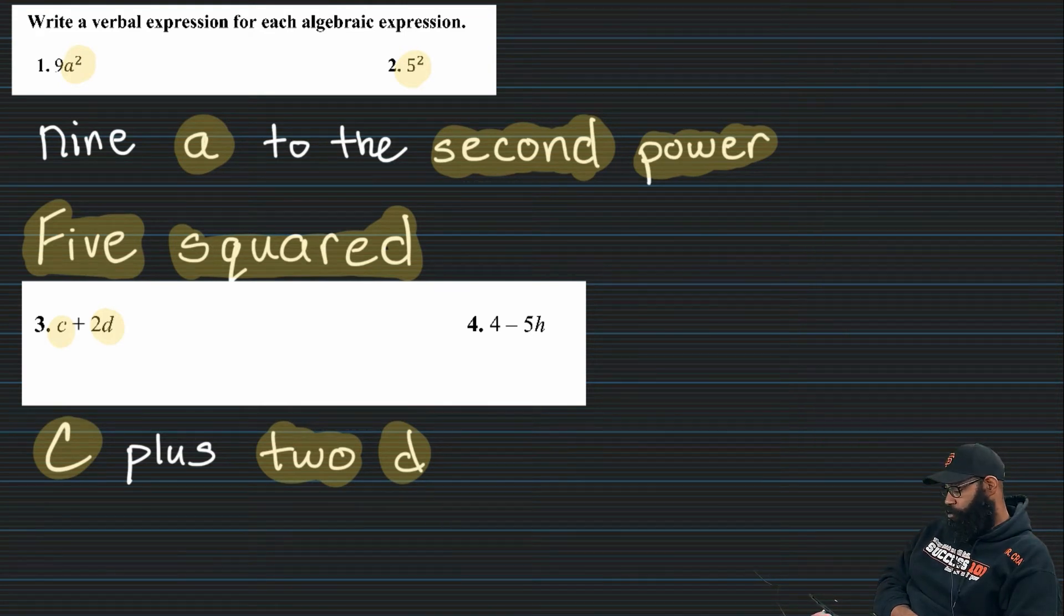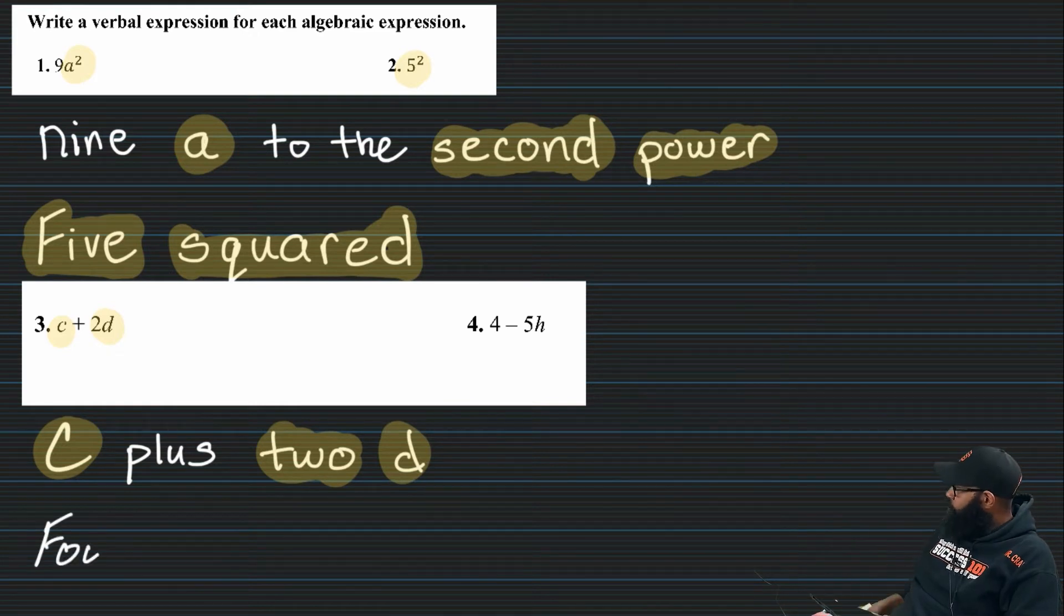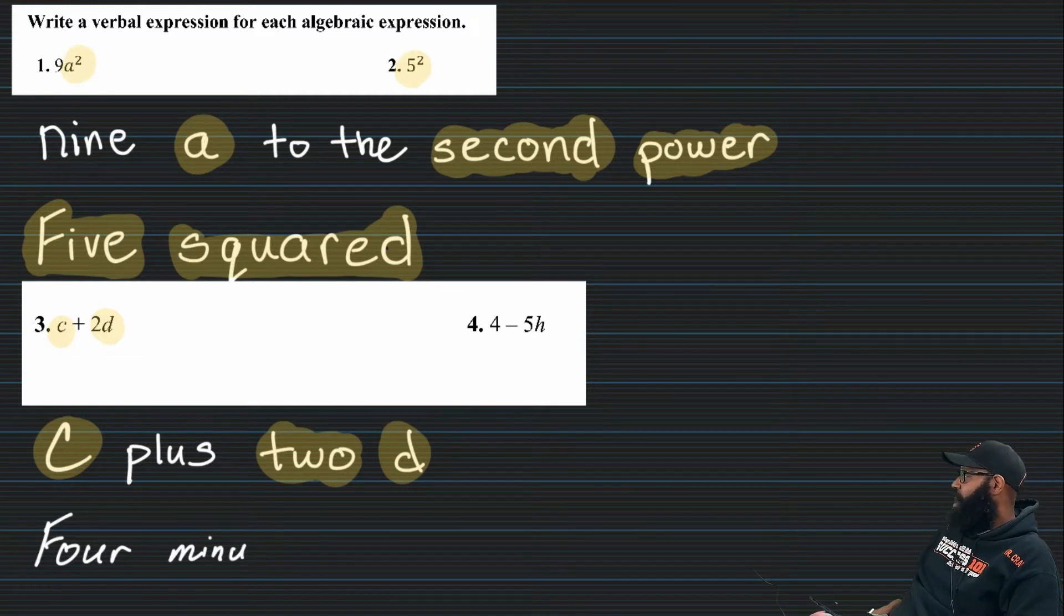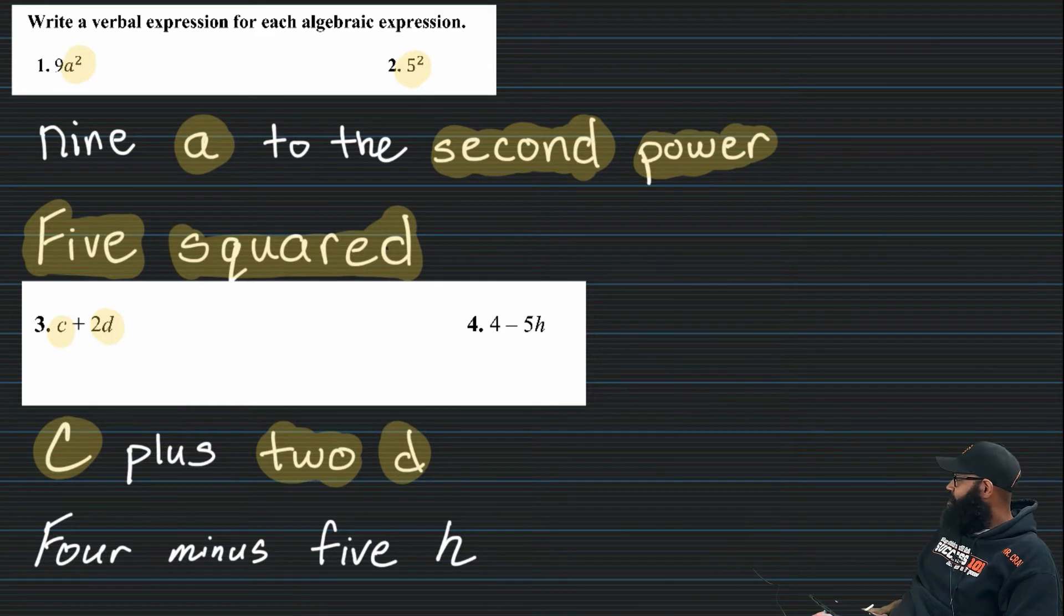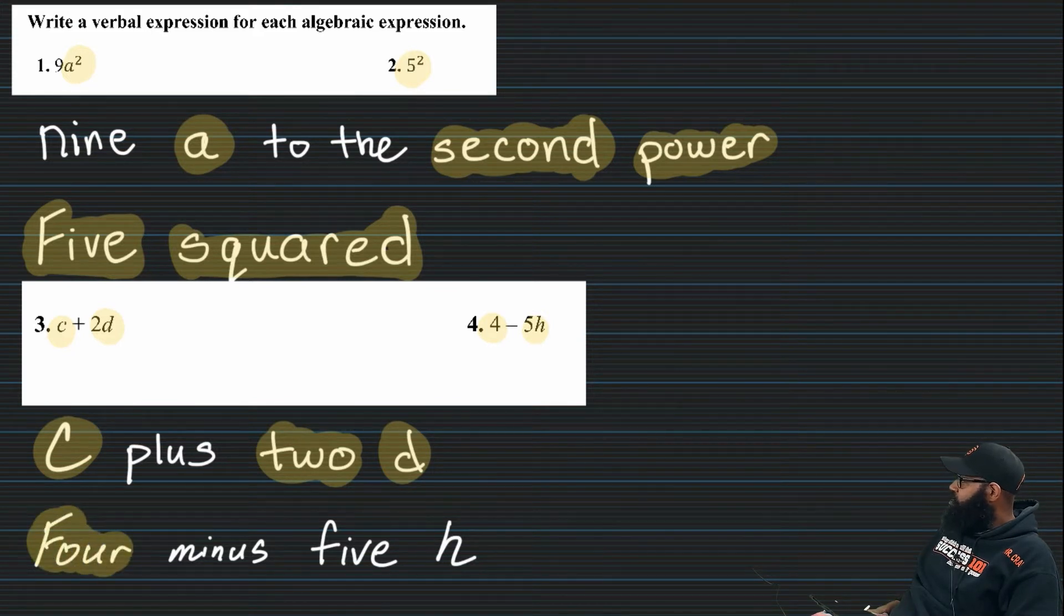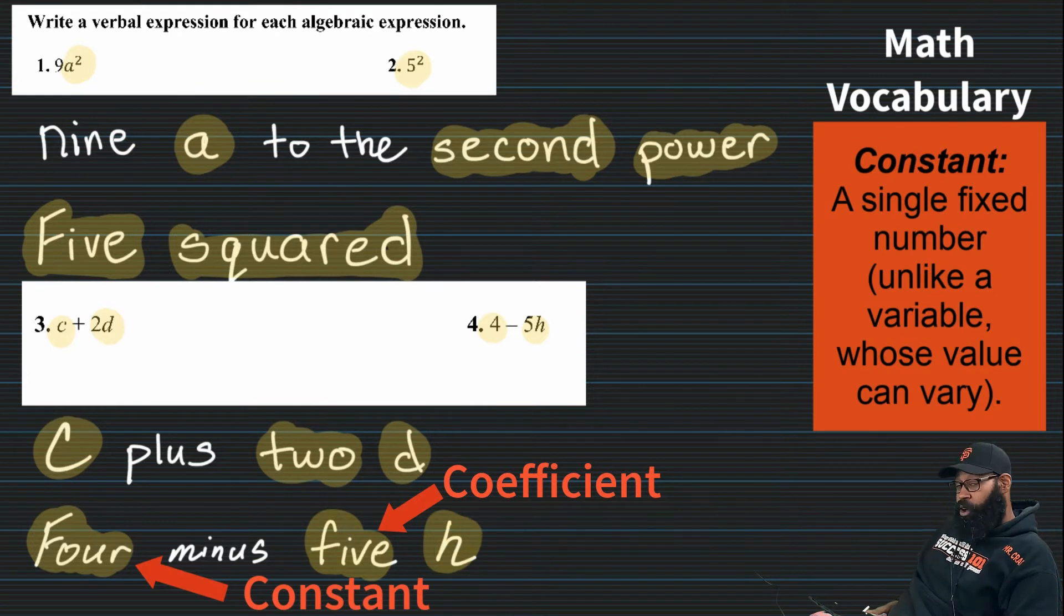Number four. Four minus five H. So again, recognizing the operation. And this one here, minus. And don't worry boys and girls, it's going to get a little bit harder. And if you would like to go ahead and highlight something, let your teacher know you're really getting it, right?